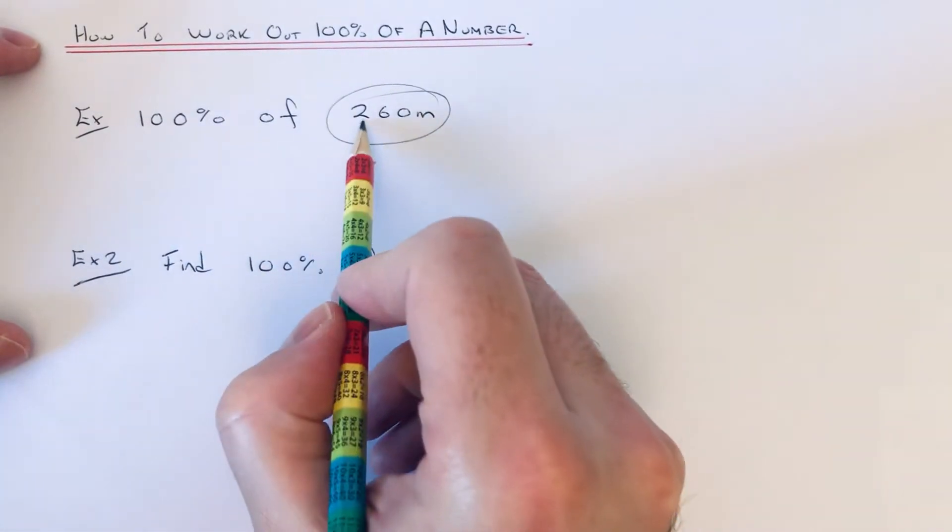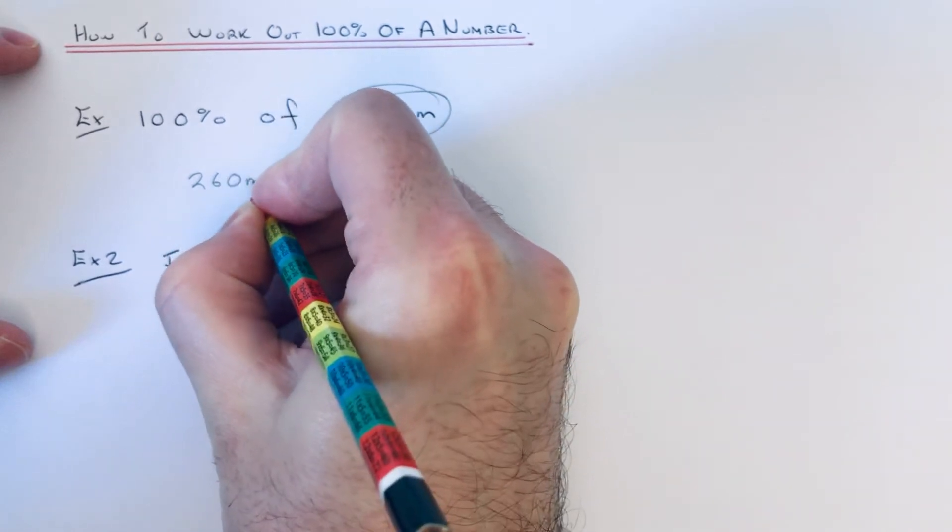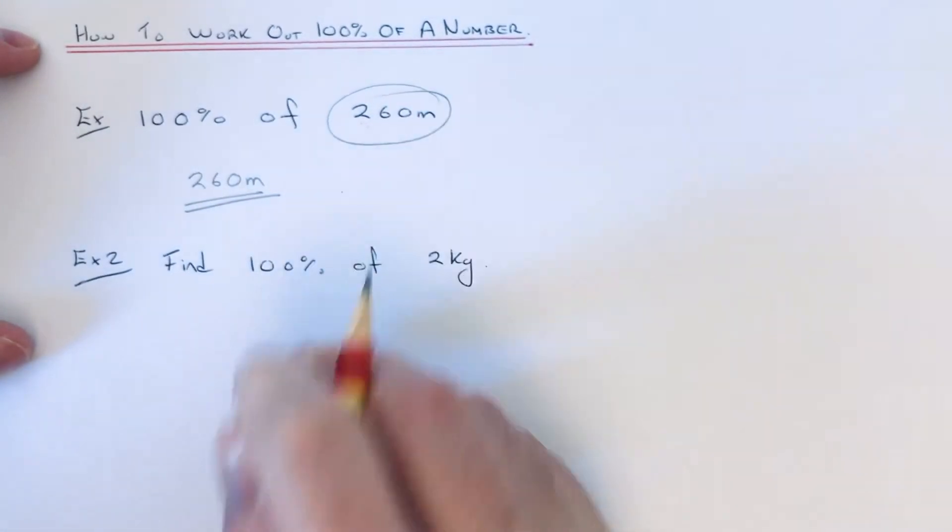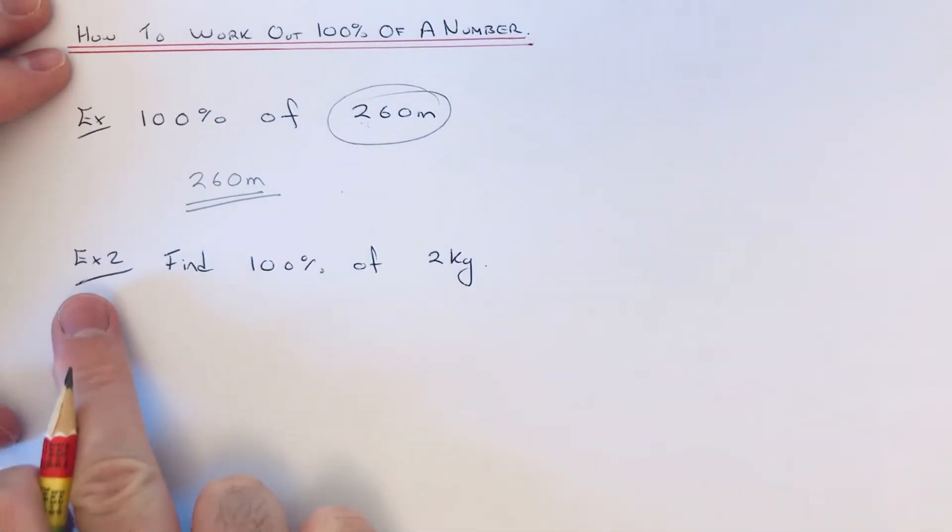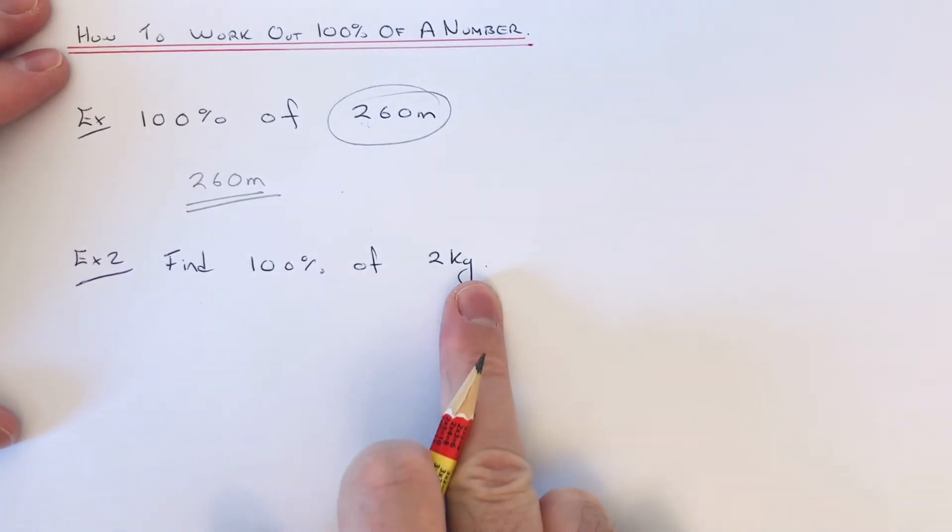That will be the answer, so 100% is 260 meters. Let's have a look at the second example. This time we need to do 100% of 2 kilograms, so again if we're doing 100% we don't need to do anything.